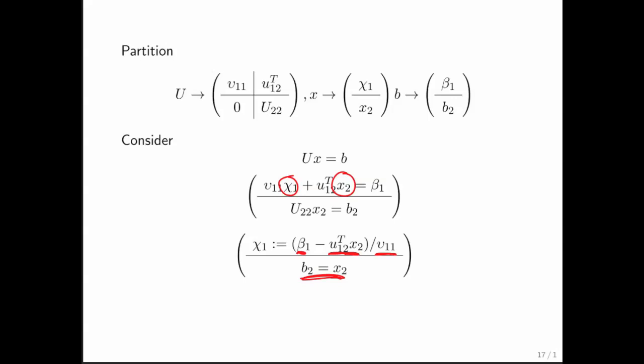We subtracted all the terms that now we knew from the right-hand side, and then we divided by the coefficient that remained and multiplied the unknown that we were trying to solve for at that point. Go back and look very carefully at back substitution, and that's what you will find.